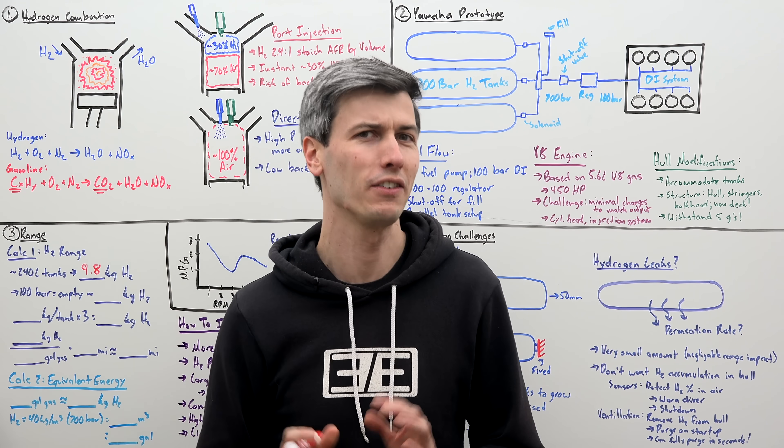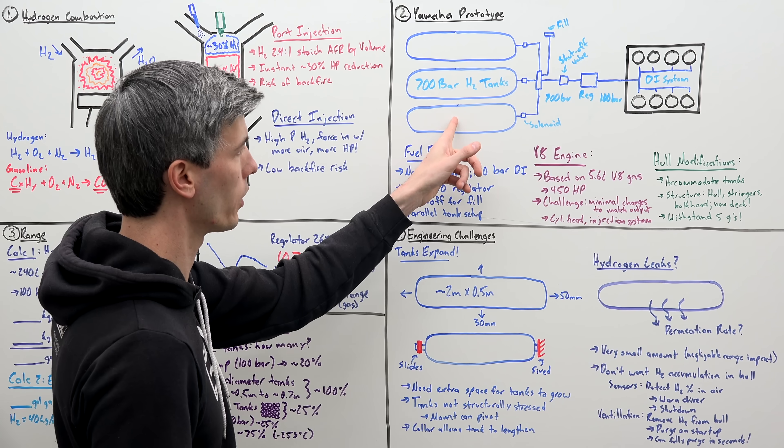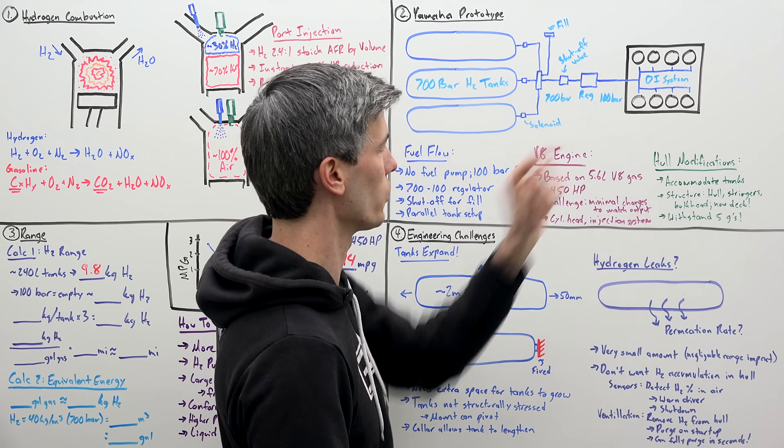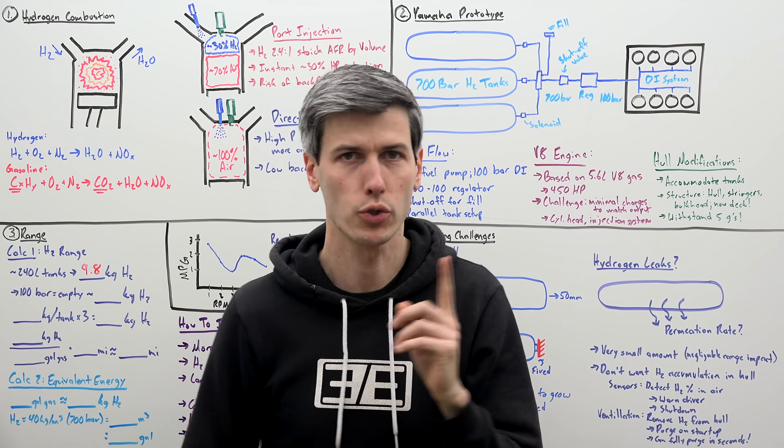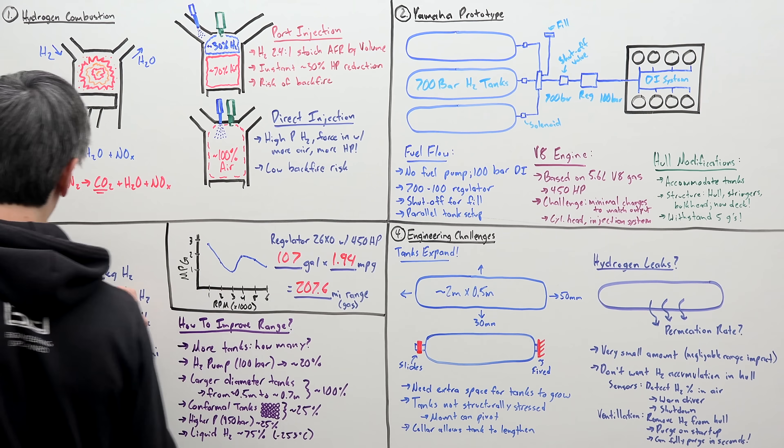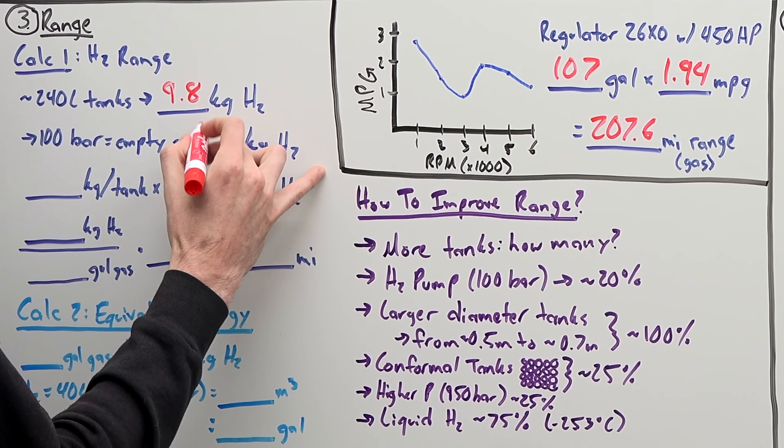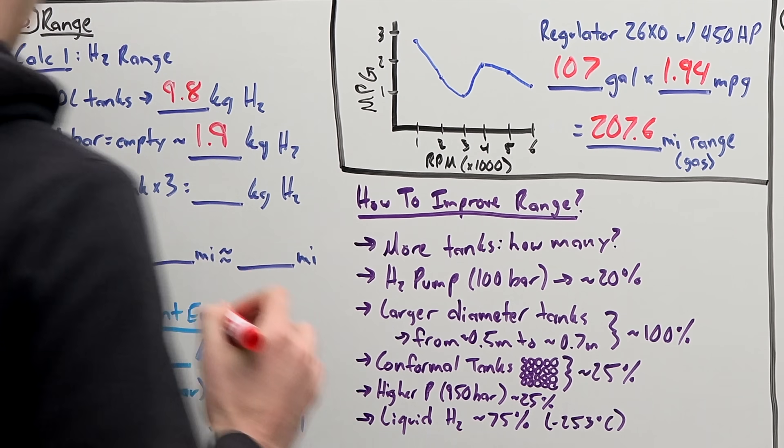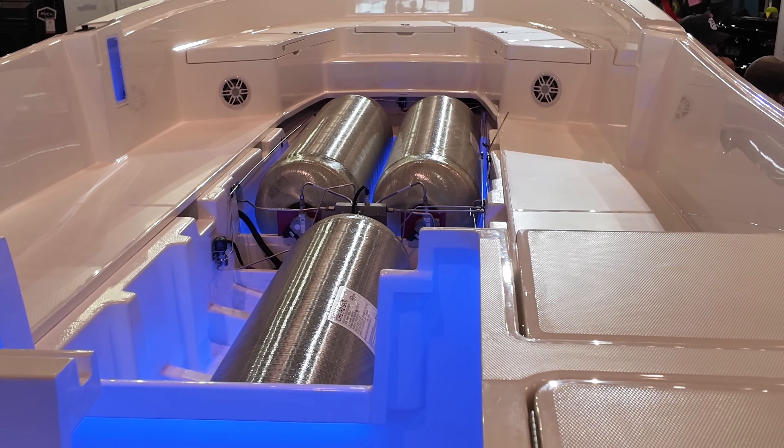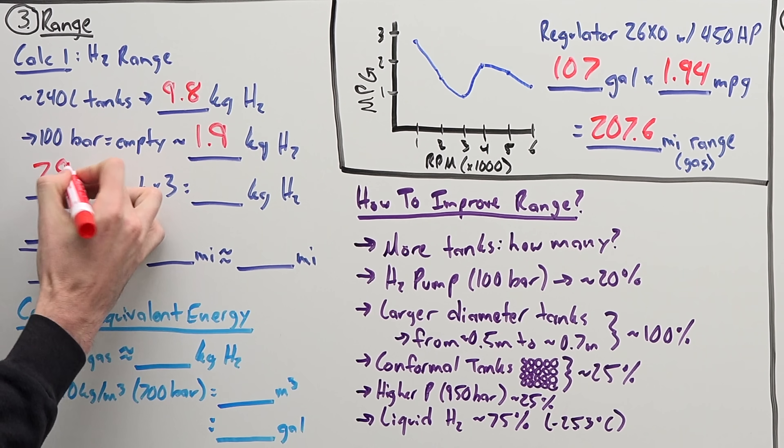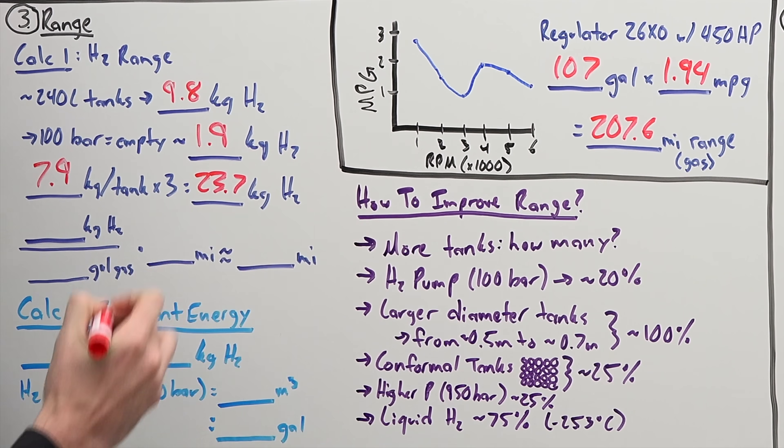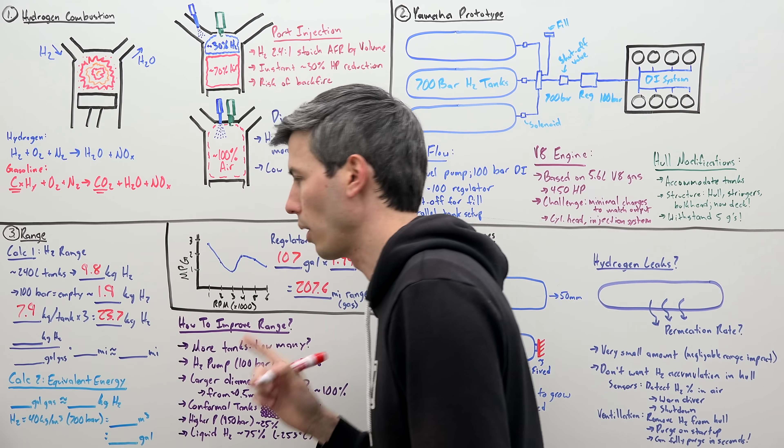However, these tanks are effectively empty when they reach 100 bar because we don't have a fuel pump and we're reliant on that pressure for injecting into the engine. So, we have to subtract the amount of hydrogen that will be stored at 100 bar in these tanks. So, 100 bar for each tank is going to give us about 1.9 kilograms of hydrogen. So, we have three tanks each of which gives us a usable 7.9 kilograms or a grand total of about 23.7 kilograms of hydrogen stored on board.